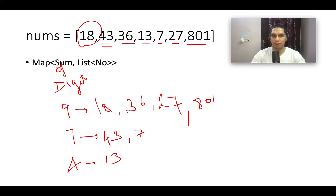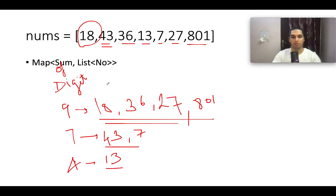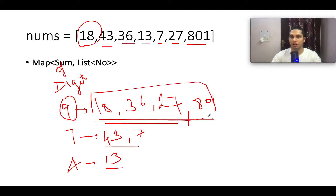Now we know the numbers that sum to 9 are 18, 36, 27, 801; the numbers that sum to 7 are 43 and 7; and 13 sums to 4. Once grouping is done, we iterate over each map entry, extract all elements and sort them. Our goal is to identify the two elements with the largest value.